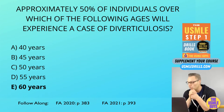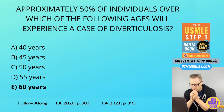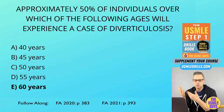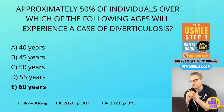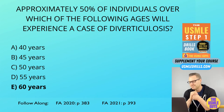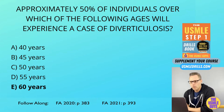Diverticulosis is more common in older individuals and results from increased intraluminal pressure and focal weaknesses of the colonic wall, associated with low-fiber diets high in fats and red meats, and obesity. Diverticulitis is an inflammatory process presenting with left lower quadrant pain, fever, and leukocytosis, managed with antibiotics. If untreated, it can lead to obstruction or perforation.